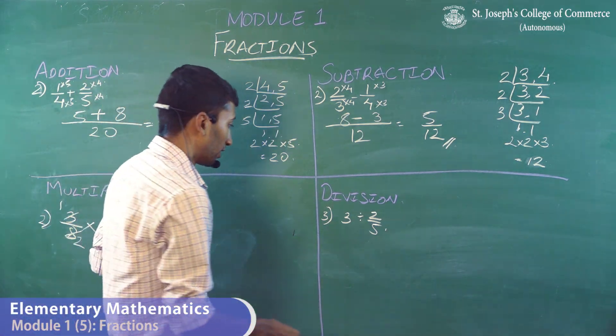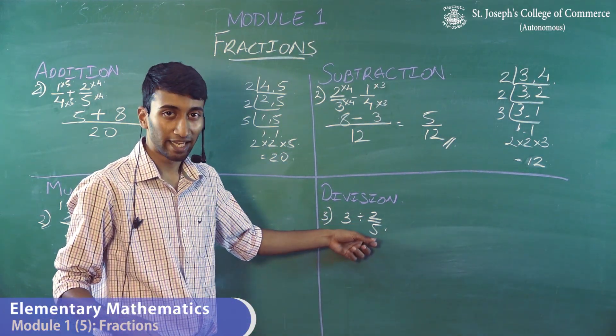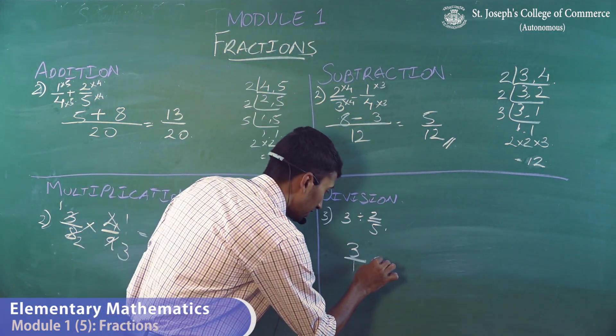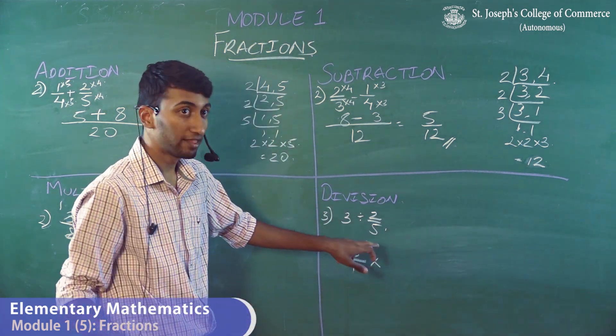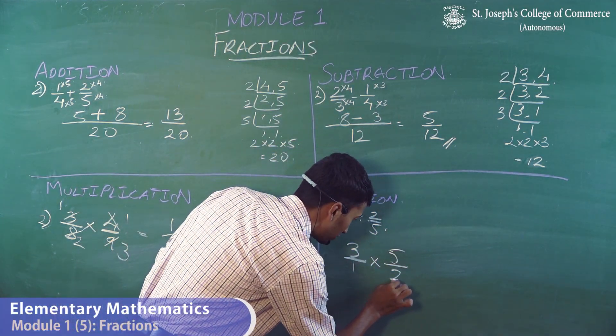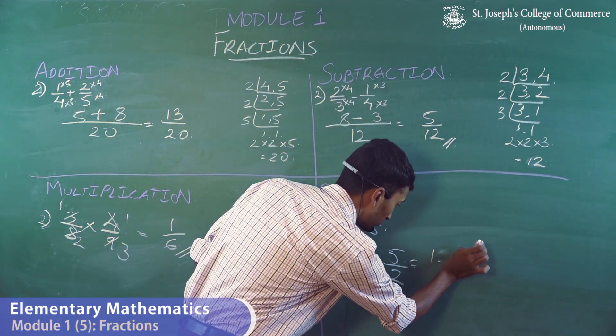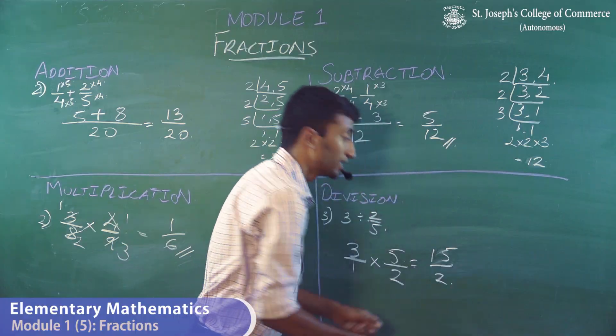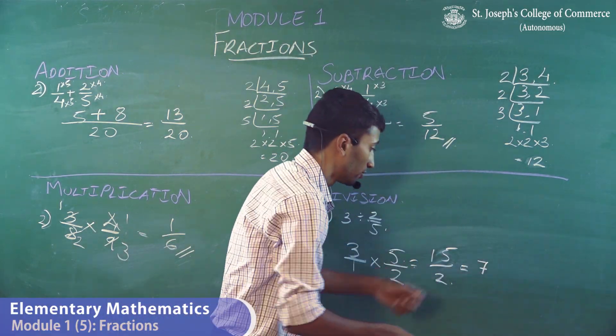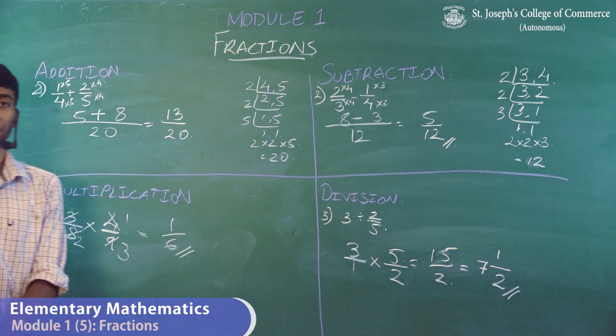Moving into division. Since there's a division sign, you have to reciprocate the second part. So I can write 3 as 3 by 1, multiplication sign, and then after that you reciprocate the other fraction. That becomes 5 by 2. So 5 threes are 15, and 2 ones are 2. You can't leave it in an improper fraction, so you have to convert it. 2 sevens are 14, 1 is a remainder by 2. So 7 and a half is your answer.